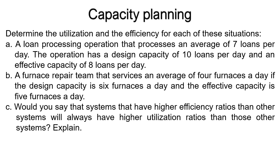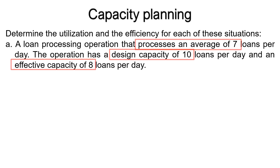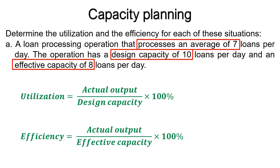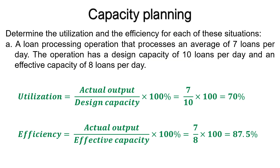In the first situation, the actual output is 7 loans per day, the design capacity is 10 loans per day, and the effective capacity is 8 loans per day. Substituting these values into the equations: utilization equals 7 divided by 10, multiplied by 100, equals 70%; and efficiency equals 7 divided by 8, multiplied by 100, equals 87.5%.